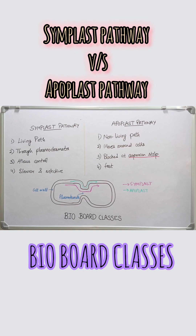When water reaches the endodermis, the Casparian strip blocks the apoplast pathway, forcing the water into the symplast before it enters the xylem. The Casparian strip consists of specialized structures found in plant roots, specifically within the endodermis layer.